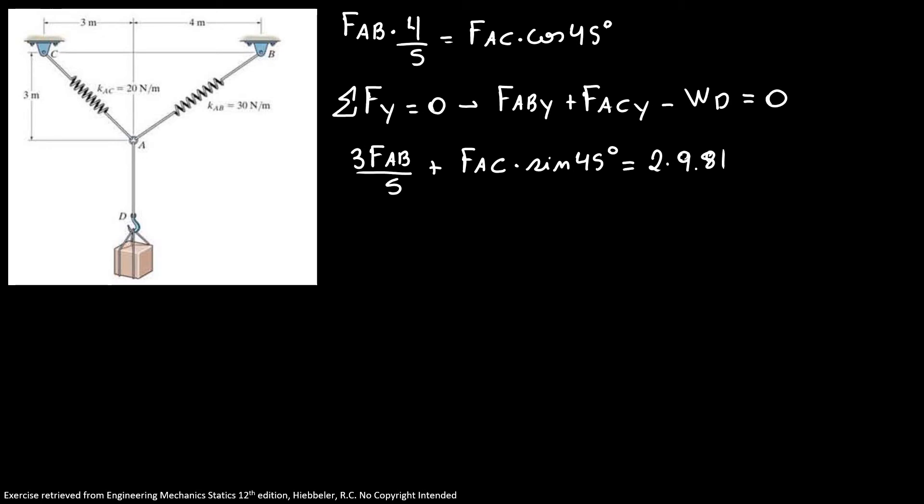Now we're going to use the advantage that cosine of 45 equals sine of 45. So in this equation I can use 3 FAB over 5 plus 4 FAB over 5 equals 19.62. So I have 7 FAB over 5 equals 19.62. FAB equals 14.0 N.